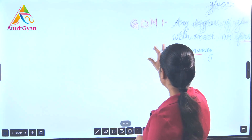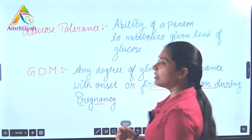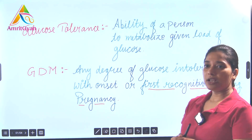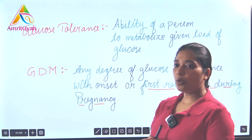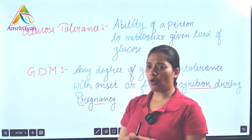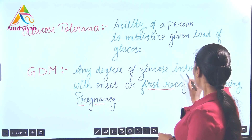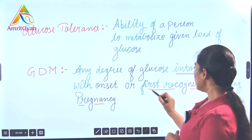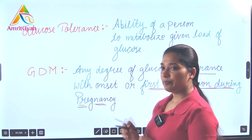For the detection of gestational diabetes mellitus, we have two kinds of tests: GTT and DIPSI. GTT is the Glucose Tolerance Test and DIPSI is the Diabetes in Pregnancy Study Group of India. Glucose tolerance test is the ability of a person to metabolize a given load of glucose, and gestational diabetes mellitus is any degree of glucose intolerance with onset or first recognition during pregnancy.